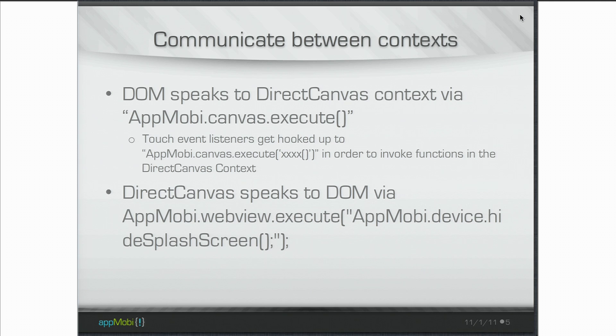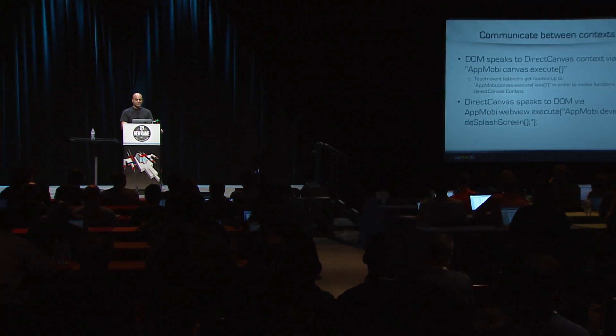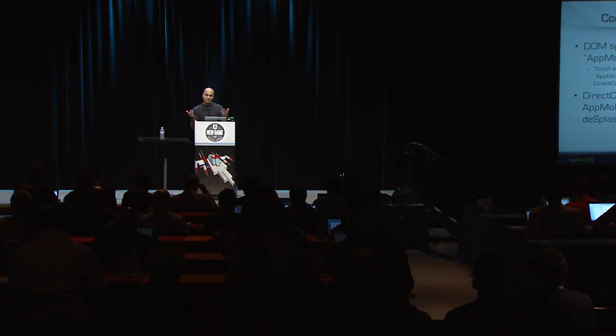We created a way for the DOM layer to speak to the game layer or the direct canvas layer. It's really simple. We called it appmobi.canvas.execute. Hopefully if and when browsers start adopting a methodology like this, there'll be a slightly different syntax. It's easy to abstract away with some simple syntactic sugar. The game layer also needs to speak back to the DOM. That one is just called appmobi.device.webview.execute — just pass in the parameter of the function name that needs to be executed at the other layer.